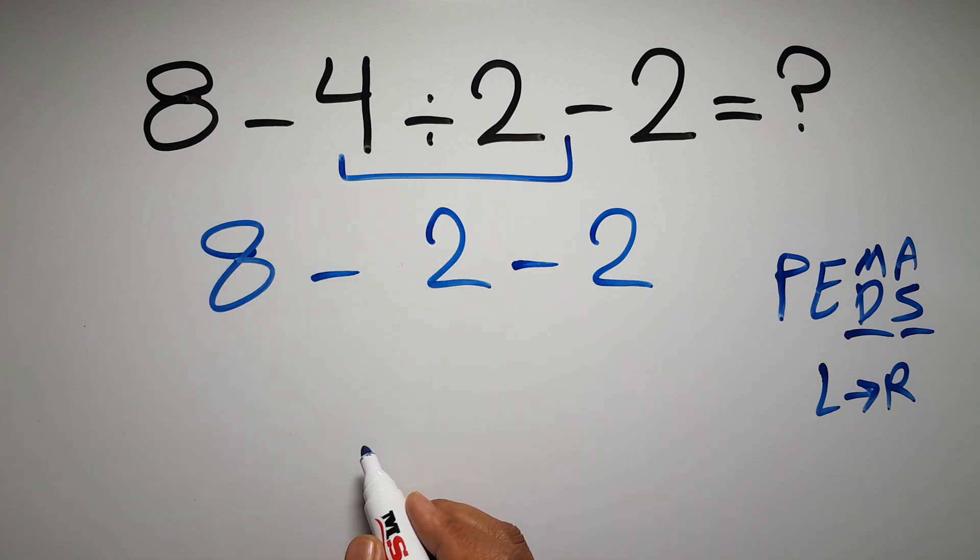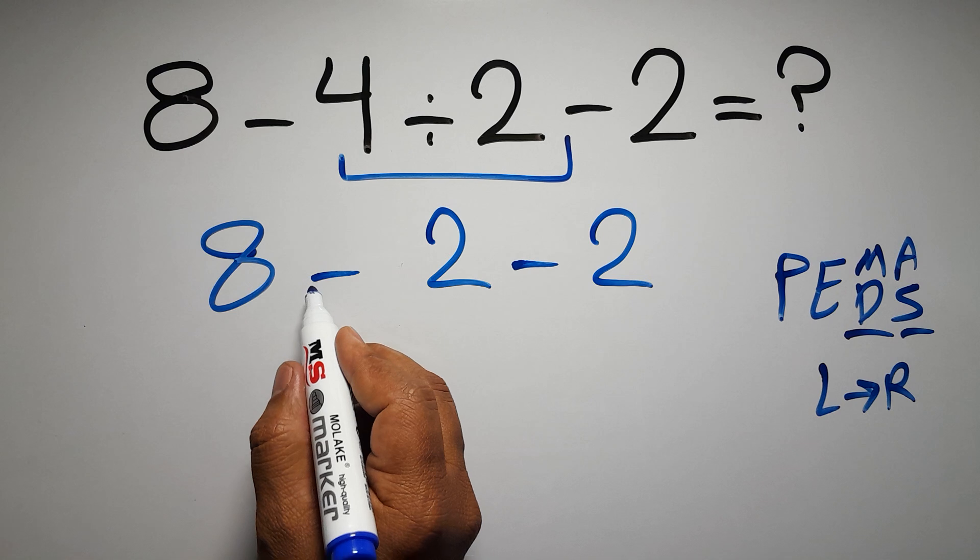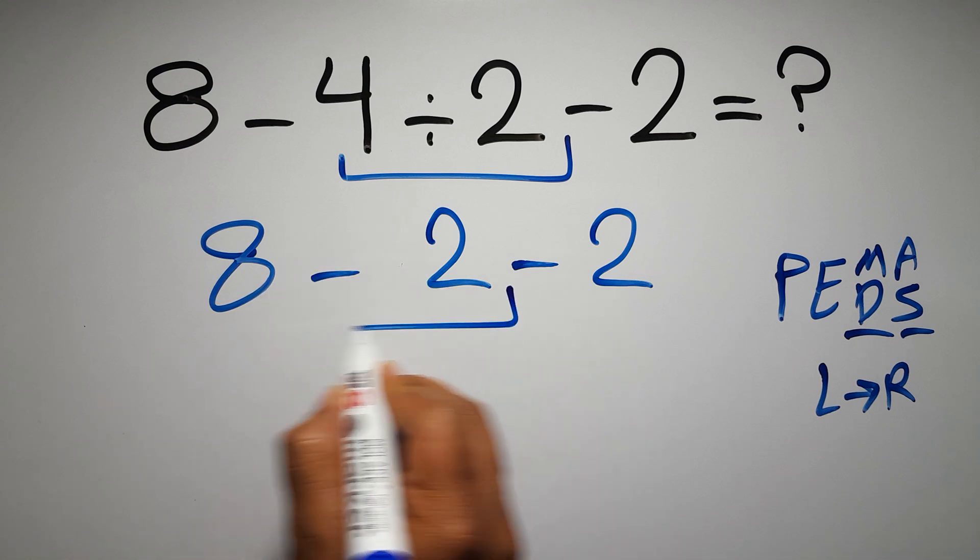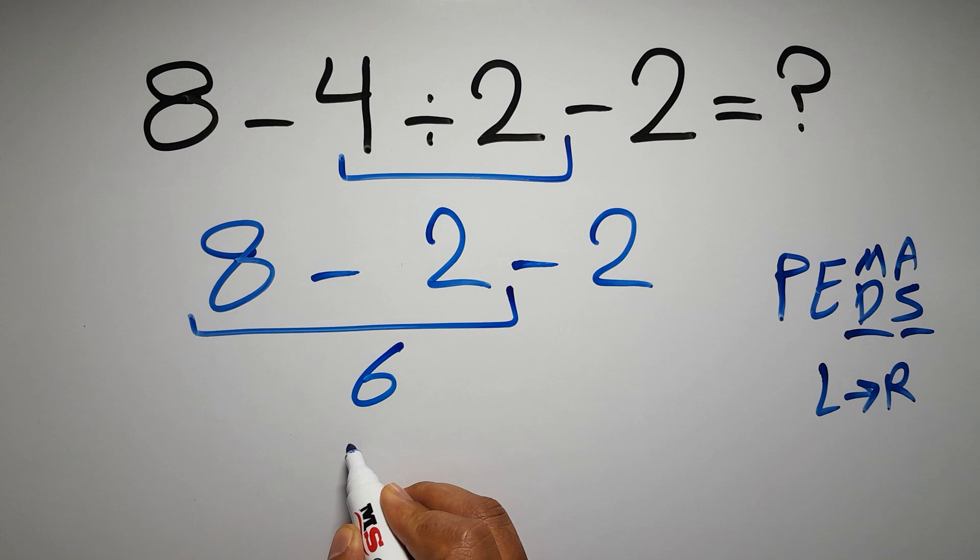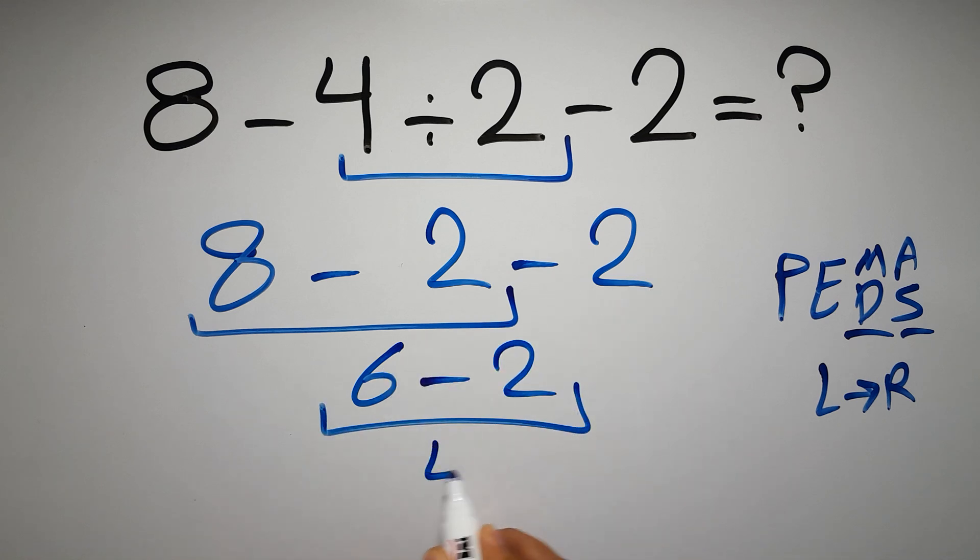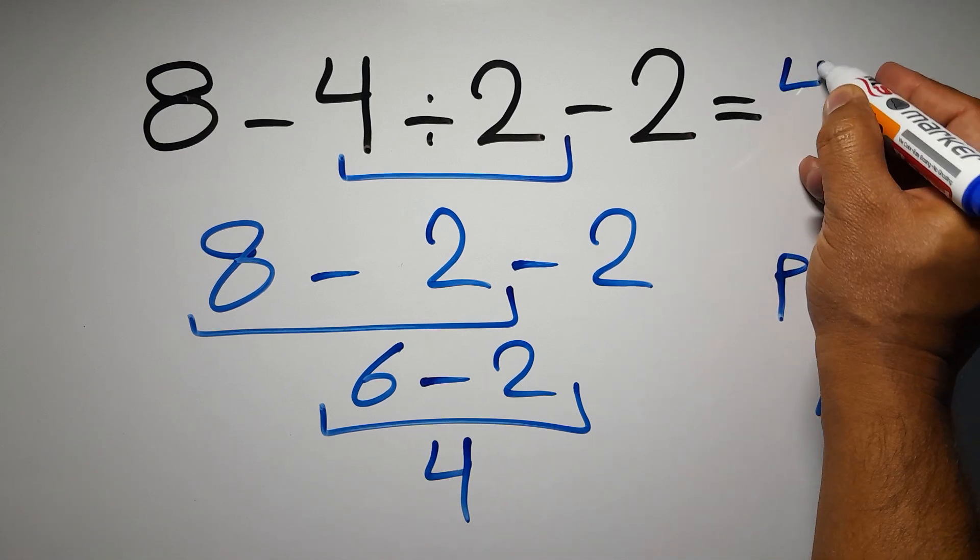So here first we have to do this subtraction: 8 minus 2 is just 6, and 6 minus 2 gives us 4. And this is our final answer to this problem. The correct answer is 4.